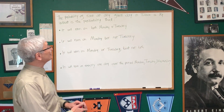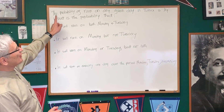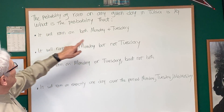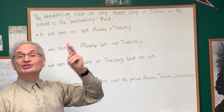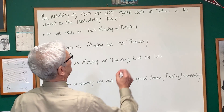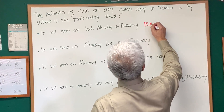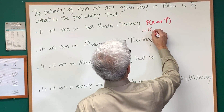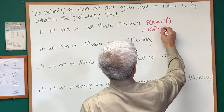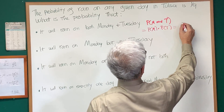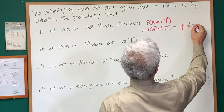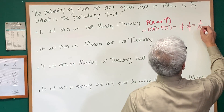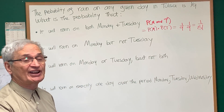This is probability of independent events. Let's read this problem together. The probability of rain on any given day in Tulsa is one-ninth. What is the probability that it will rain on both Monday and Tuesday? When they're independent events, we take the product of their probabilities. The probability of rain on Monday is one-ninth, and the probability of rain on Tuesday is likewise one-ninth. Their product is 1 over 81 — that's the probability it will rain on those two consecutive days.